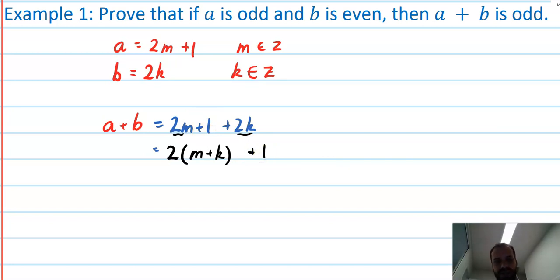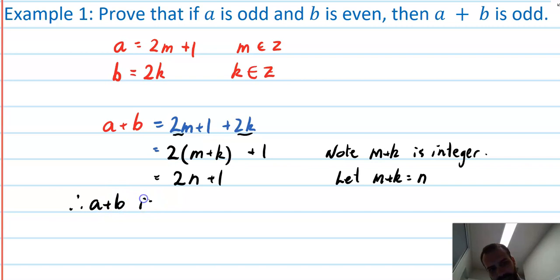Now m + k, m + k is an integer plus an integer, so that's going to give me another integer. Note: m + k is an integer. Let m + k equal n. Therefore a + b = 2n + 1, therefore a + b is odd. Hopefully you can see there we've got 2n + 1, that's what odd numbers are, they're an even number 2n plus an odd number. We've done it, we've proved it, finished.